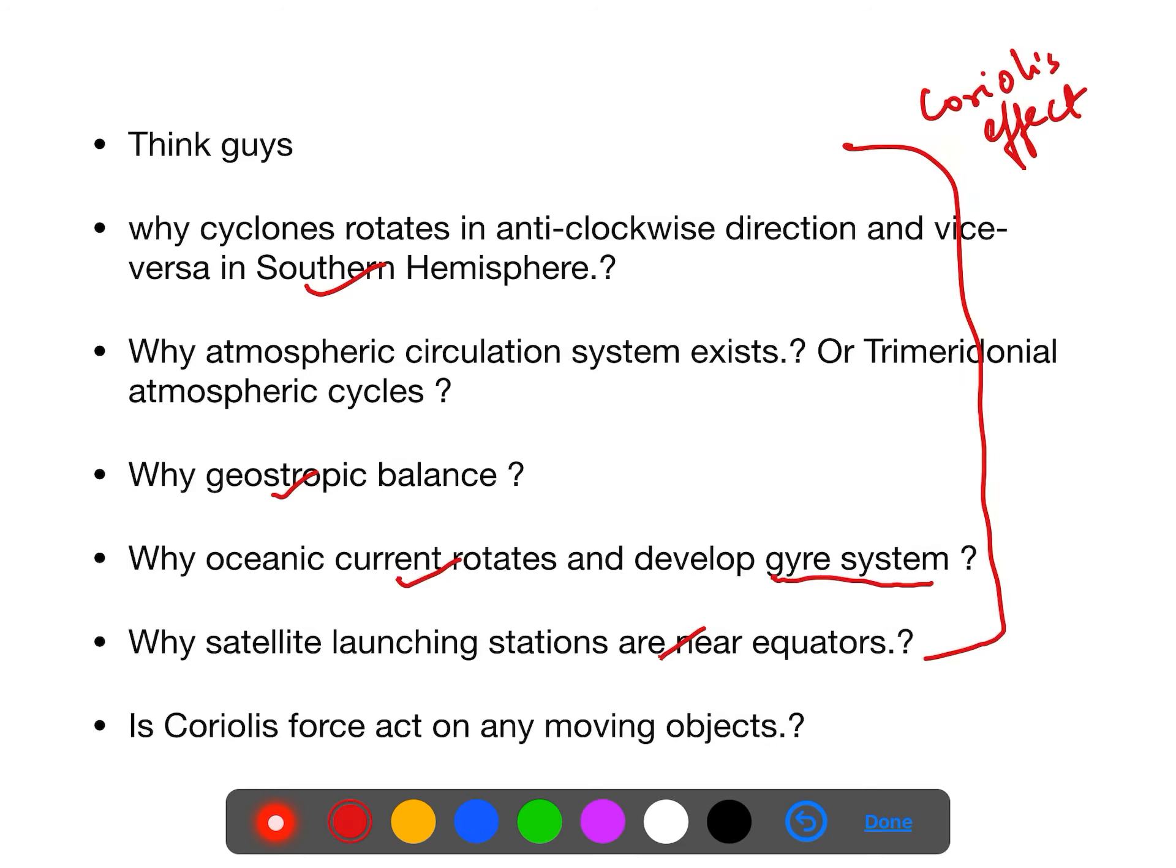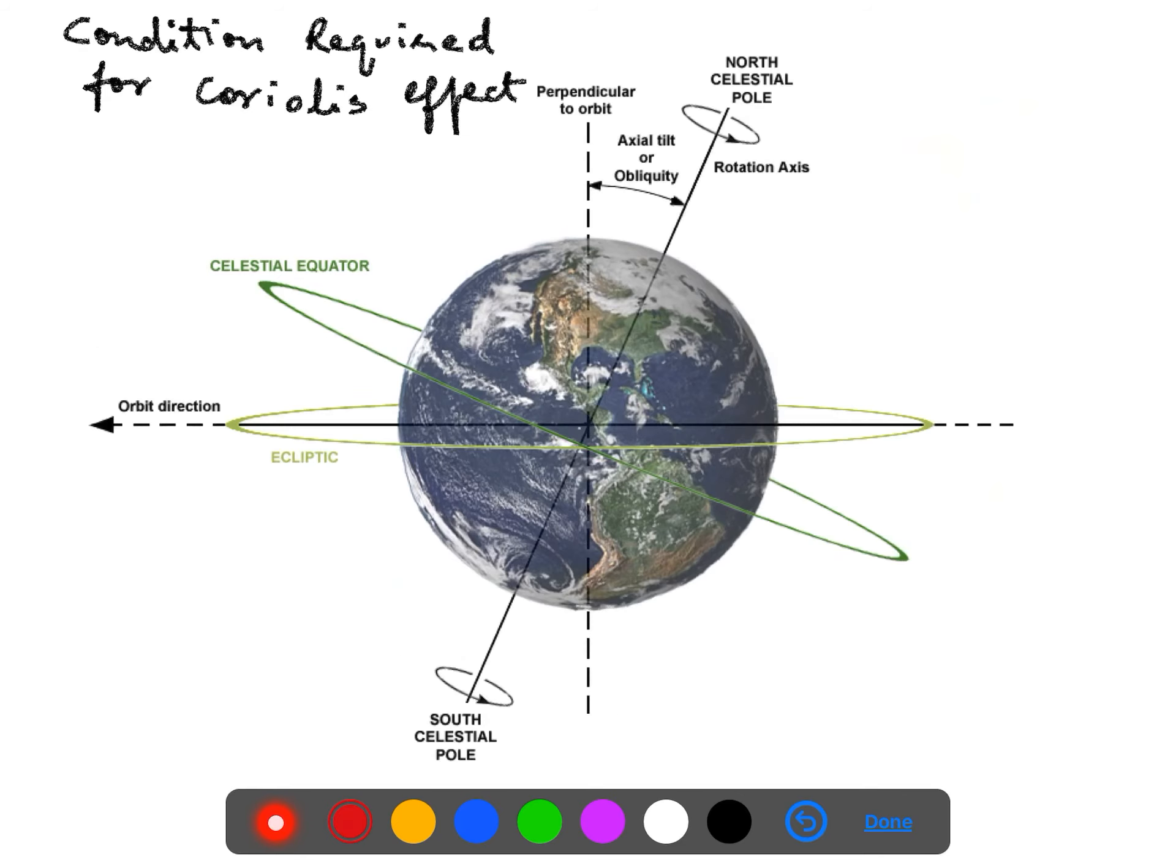So where this Coriolis effect is active? For that we have to identify the conditions required for Coriolis effect. Coriolis effect is nothing but same as Coriolis force too. So what kind of force it is and where it has originated? This force arises due to the rotation of the earth.